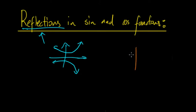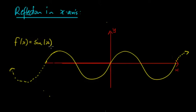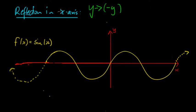Depending on which axis you're reflecting in, you just flip the function to the other side — it'll be the same shape but flipped. Starting with the sine graph, we'll look at reflection in the x-axis. What happens to the equation? Well, y is going to be replaced with negative y when reflecting in the x-axis, because it's the opposite — with the x-axis we replace y.